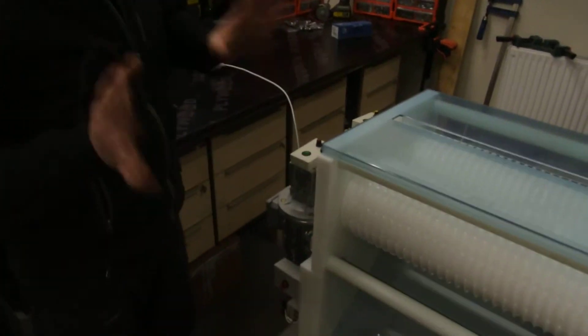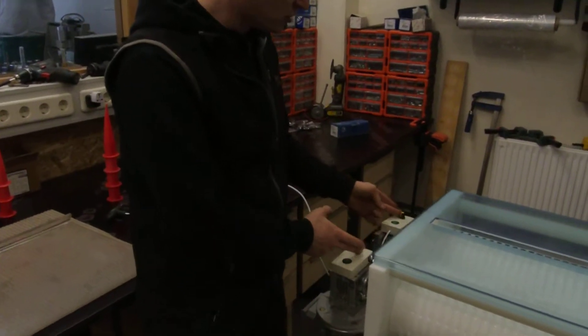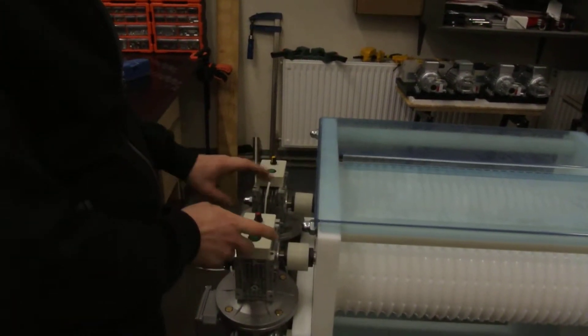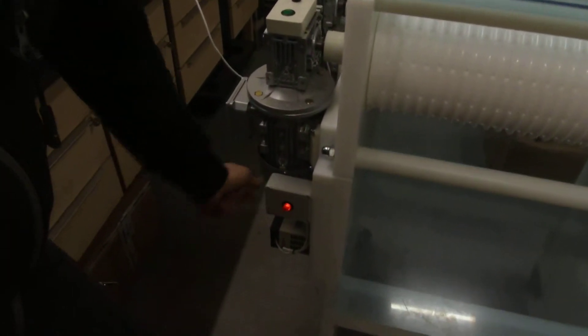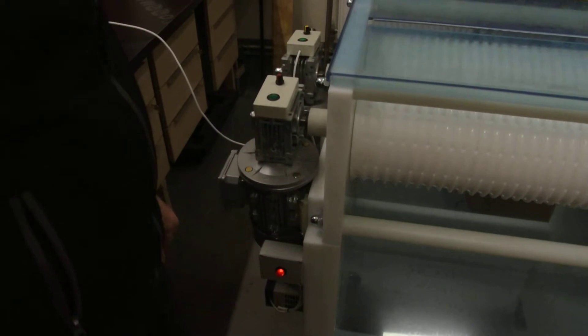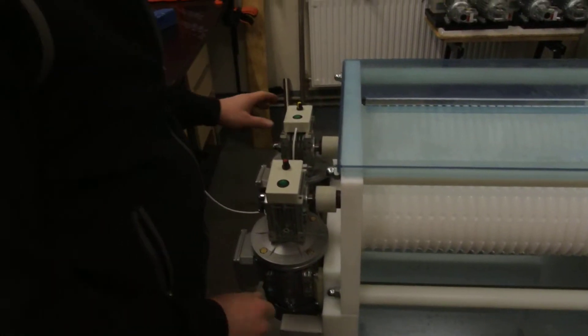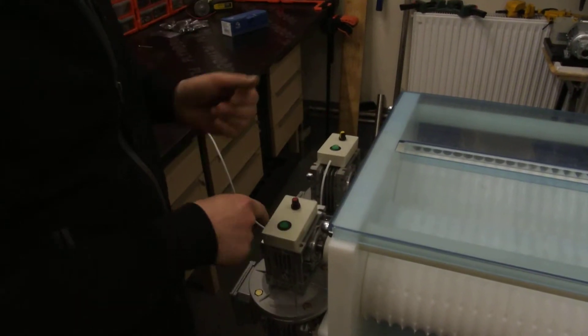Before we start, always set those knobs to the minimum and those green buttons must be to the zero. So we just turn on the machine and after five to ten seconds we can just switch on the rollers.